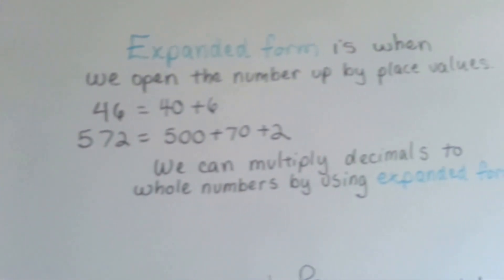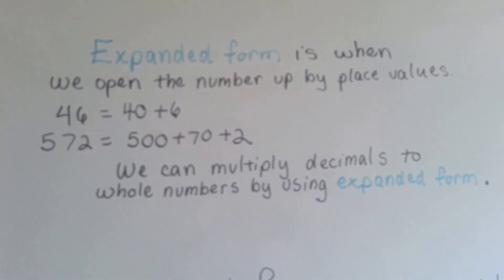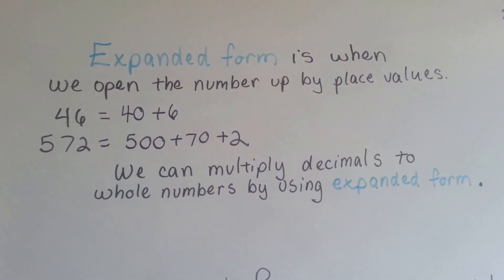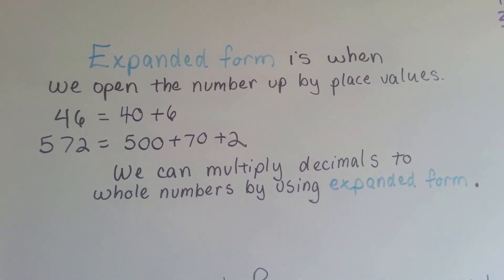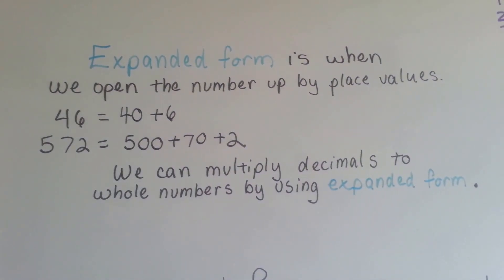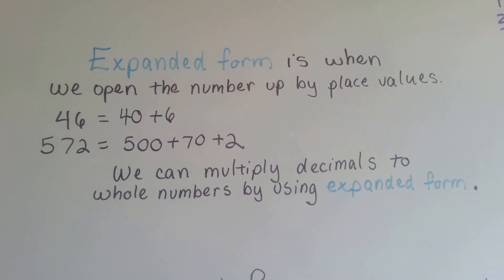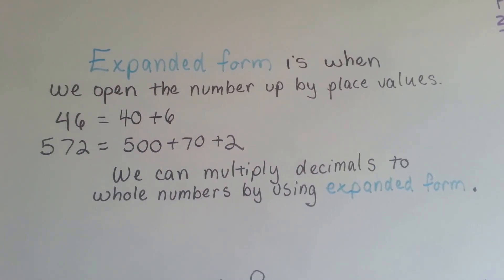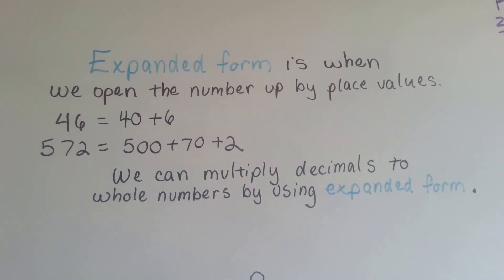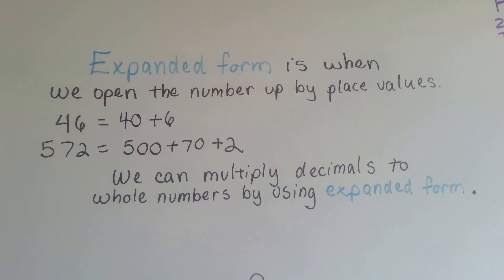If you remember, expanded form is when we open the number up by place values. 46 becomes 40 plus 6. 572 would become 500 plus 70 plus 2.